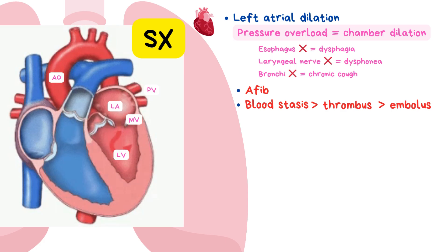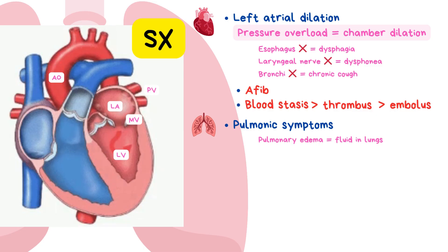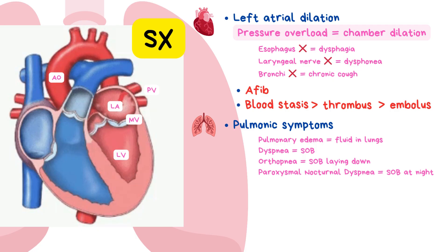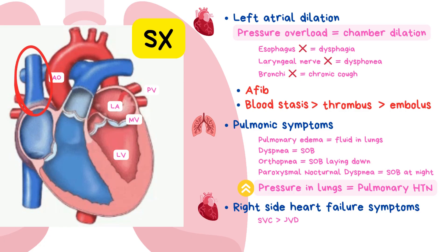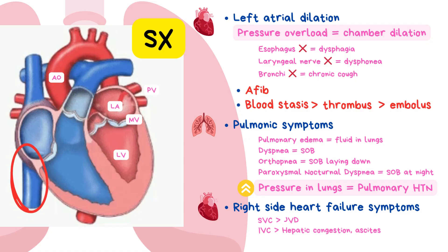As blood struggles to pass through the narrowed mitral valve, pressure backs up into the pulmonary veins and then into the lungs, causing pulmonary edema. This brings dyspnea or shortness of breath, especially during activity. The patient also gets orthopnea — worsening breathlessness when lying flat — and paroxysmal nocturnal dyspnea (PND) when fluid pooling overnight wakes them gasping for air. As pulmonary pressures continue to rise, we reach pulmonary hypertension, which strains the right heart, eventually leading to right-sided heart failure with jugular vein distension, hepatic congestion, ascites, and ankle or lower limb edema.